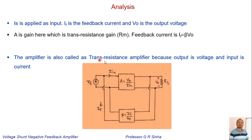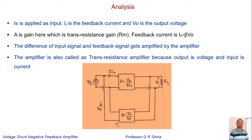This amplifier is also called a trans-resistance amplifier because the output is voltage and the input signal is current. The difference of the input signal and the feedback signal is amplified by the amplifier, since we have a closed loop with feedback. We are interested in studying the effect of feedback on input impedance and the effect of feedback on overall gain — that is, the trans-resistance gain with feedback.